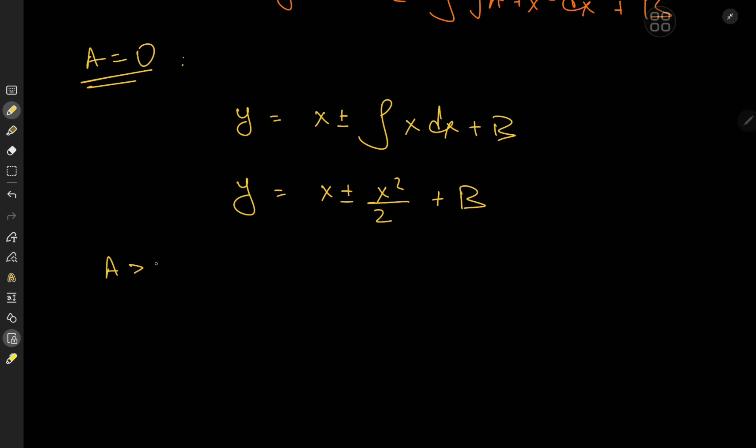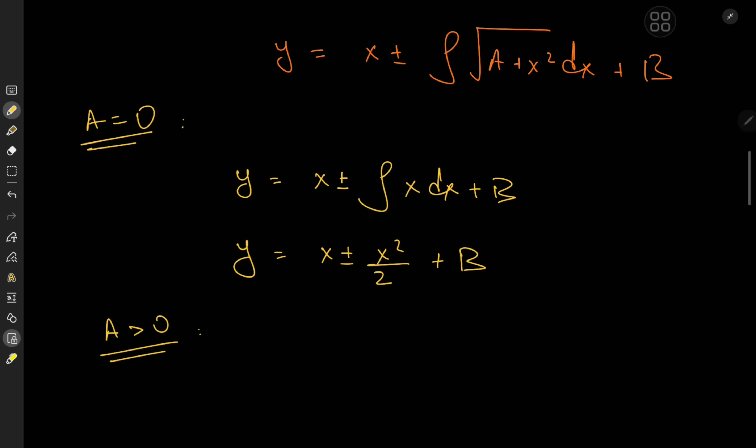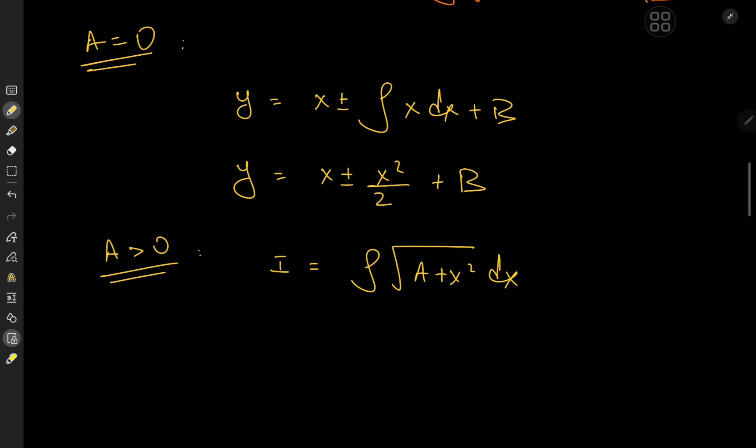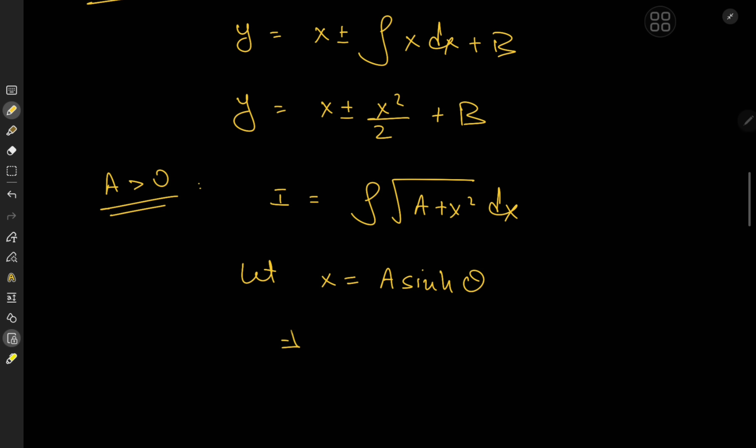However, for the case of a being positive, we actually get a nicer looking result or at least a more interesting looking one. So in that case I'm interested in evaluating I, that is the integral of √(a + x²) dx. And for that purpose, we'll make a transformation that is letting x equal √a times the hyperbolic sine of theta. So this implies that dx equals √a times the hyperbolic cosine of theta d theta.